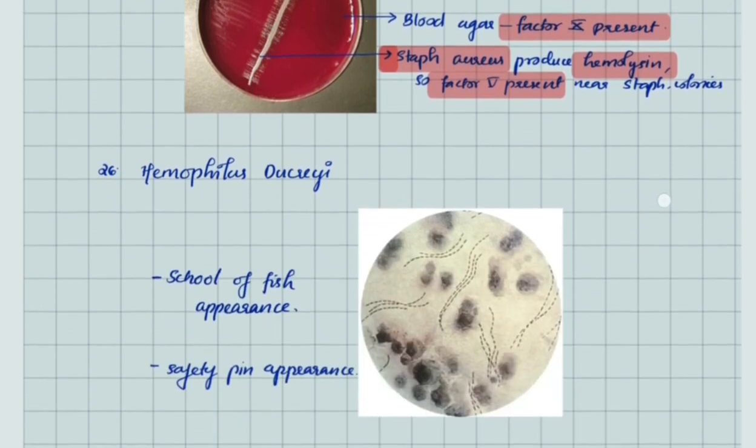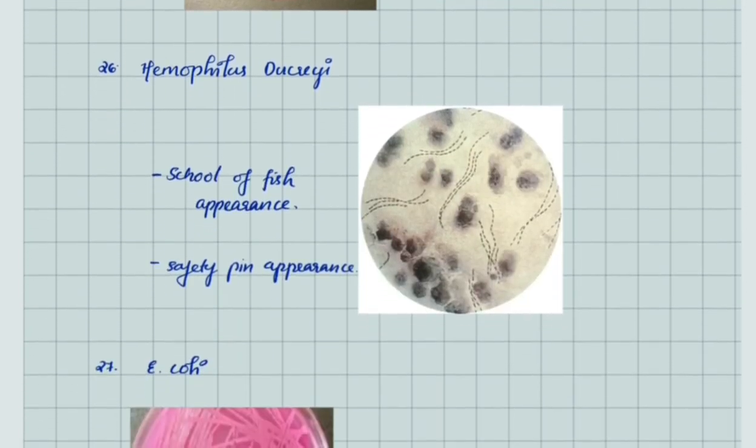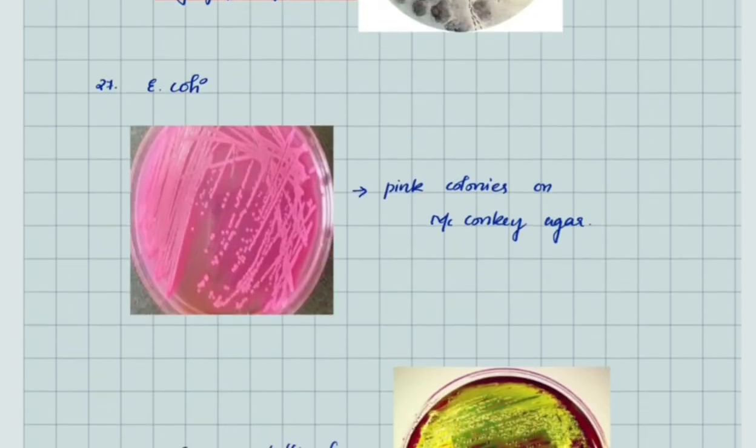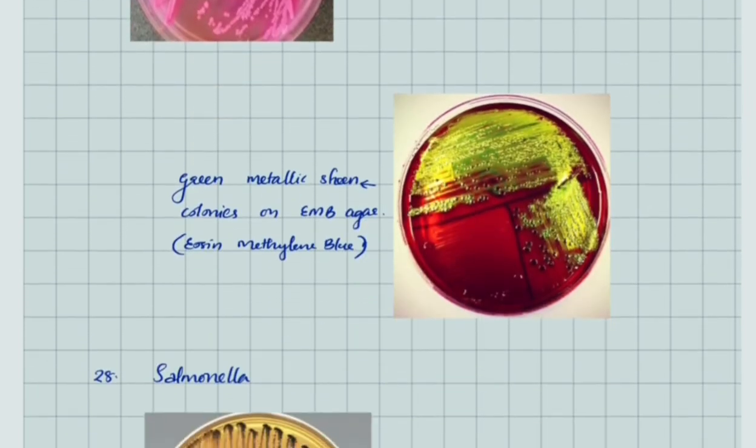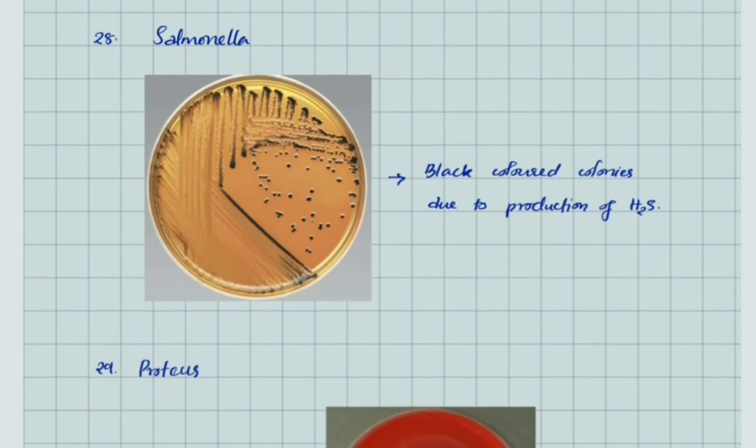Haemophilus ducreyi gives school of fish appearance, and the bacilli itself has safety pin appearance. E. coli shows pink colonies on MacConkey agar due to lactose fermentation and green metallic sheen colonies on EMB agar. EMB stands for eosin methylene blue.